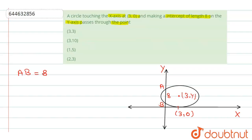We have to find the point on the y-axis that the circle passes through. As we know, if we take any perpendicular from the center onto chord AB, the radius is always perpendicular to the chord and bisects it.